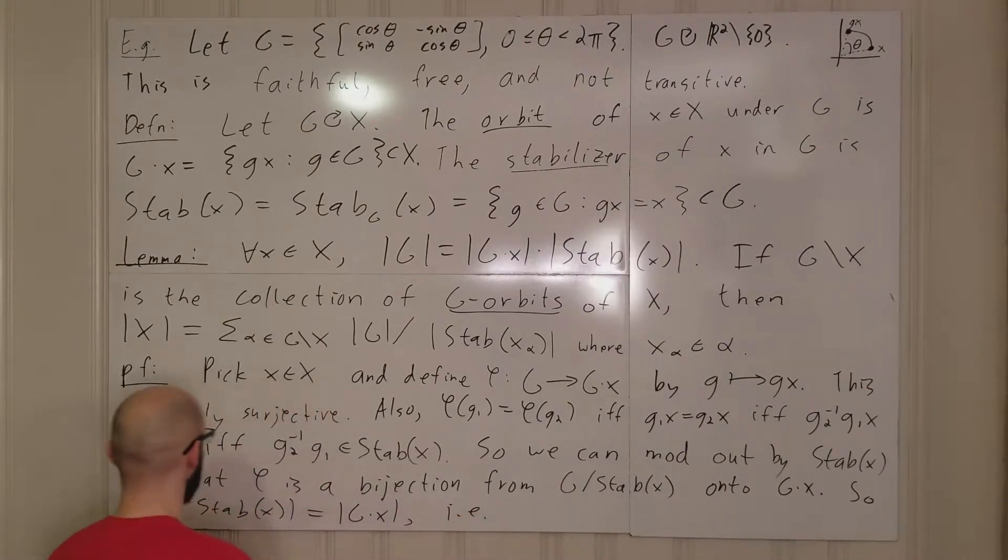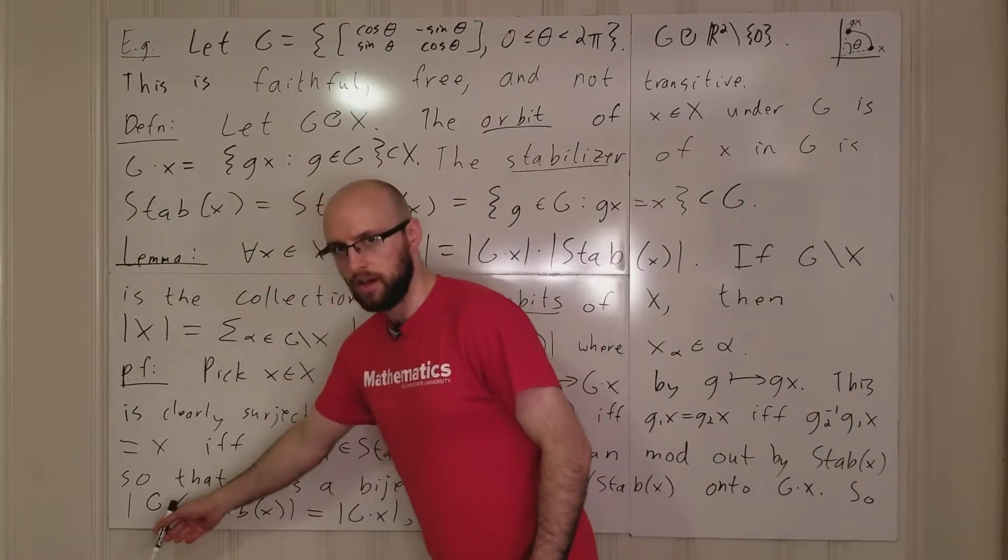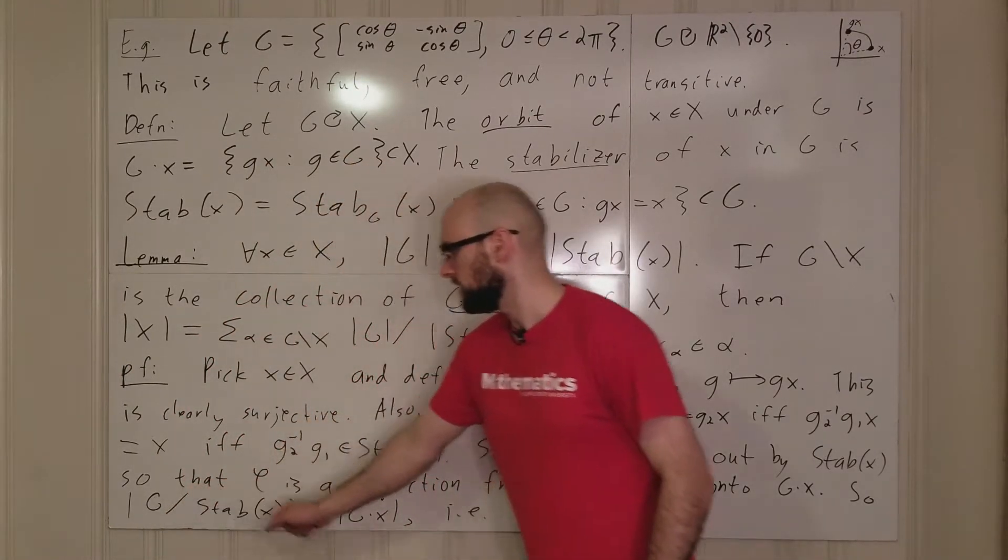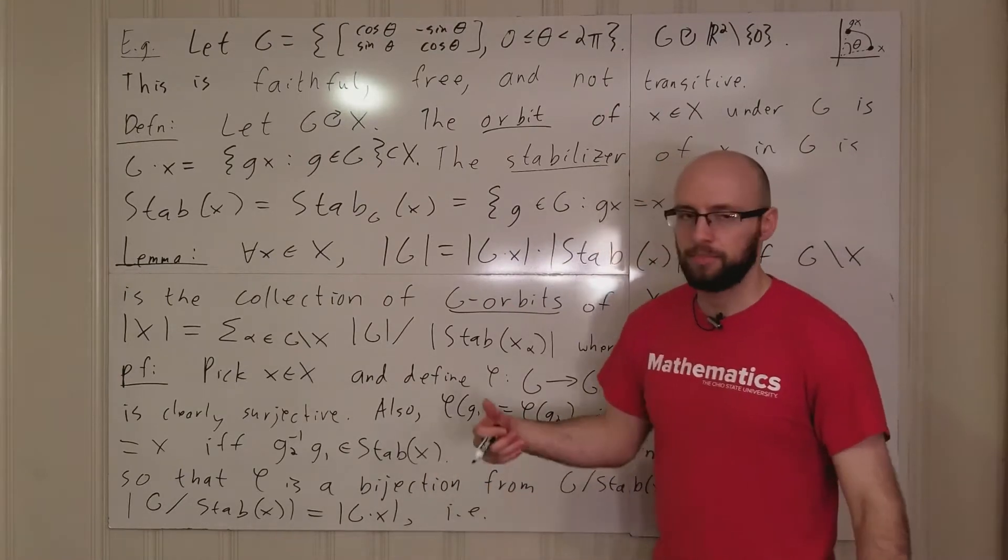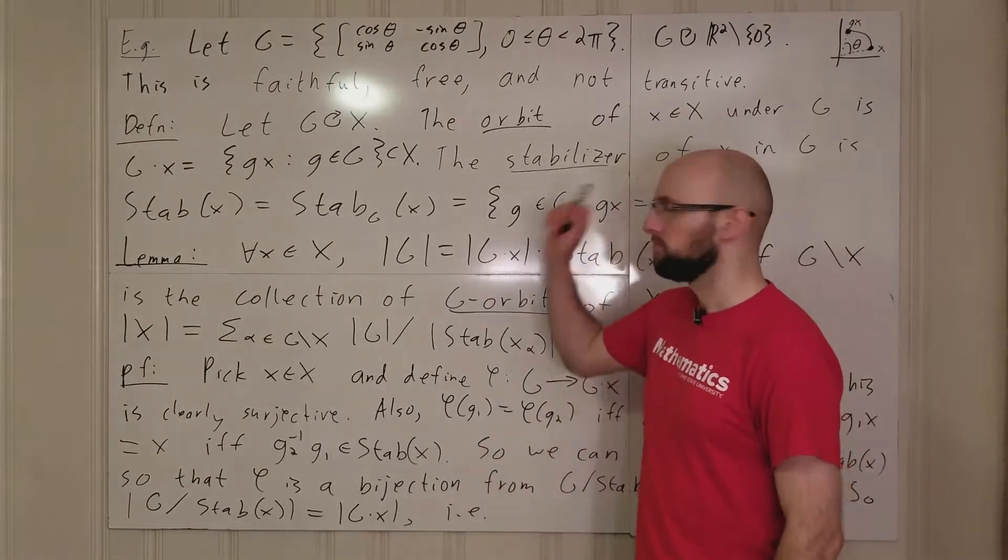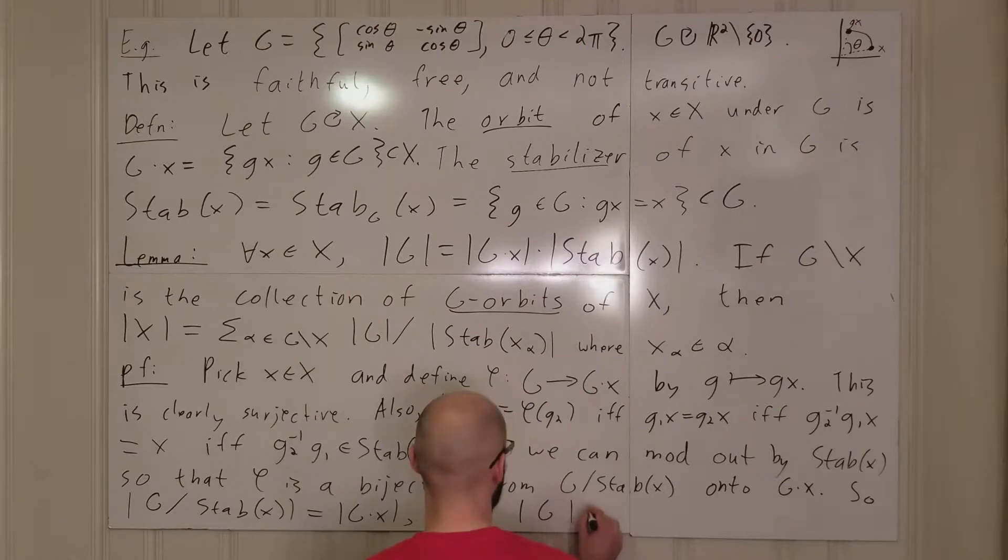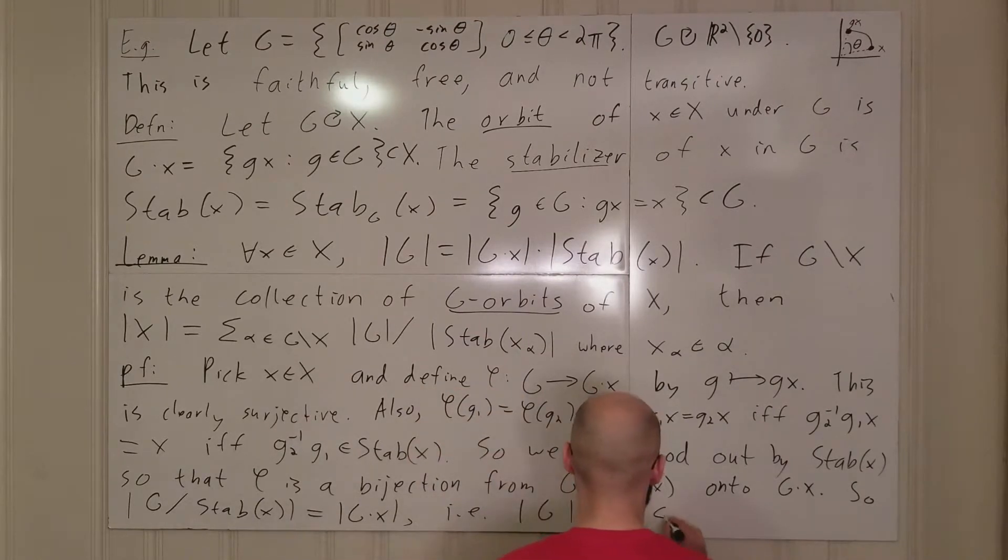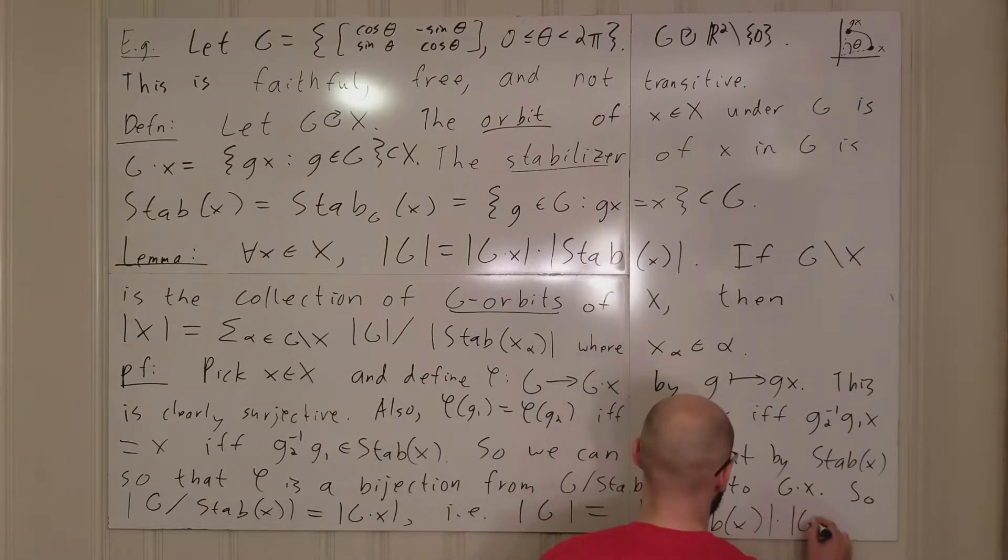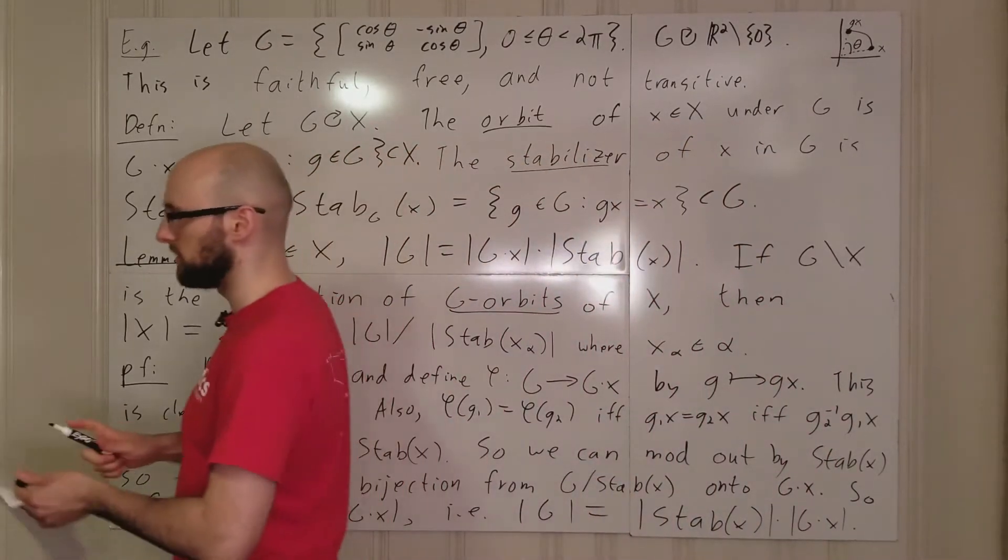But anyways, if you just throw some norms onto everything, get g mod the stabilizer of x is equal to g dot x. I.e., the norm of g mod the stabilizer ends up being the norm of g divided by the norm of the stabilizer. And you just multiply it to the other side. And then we get g is equal to stabilizer of x times g times x. And so that's exactly the equation that we wanted to prove.